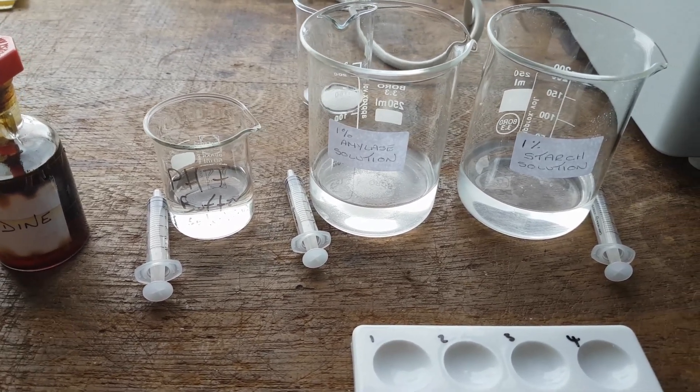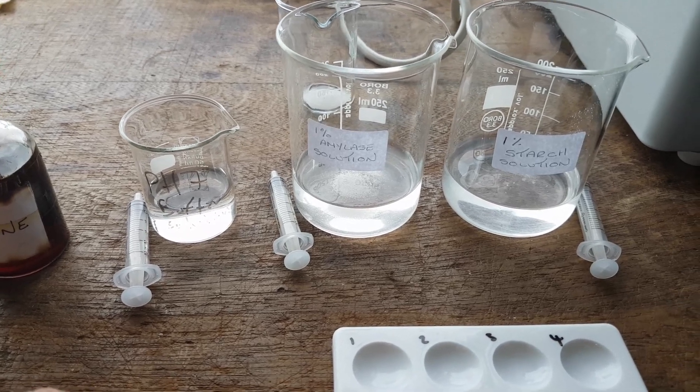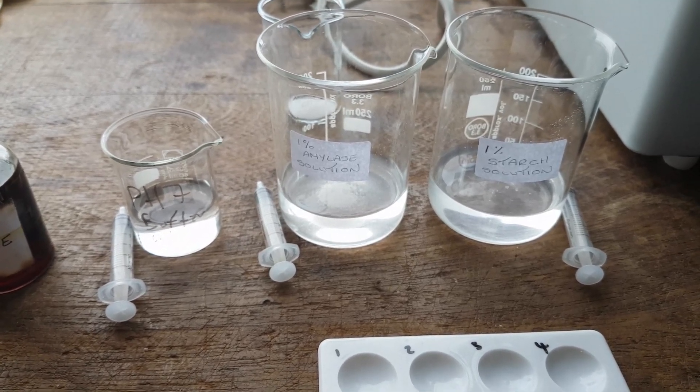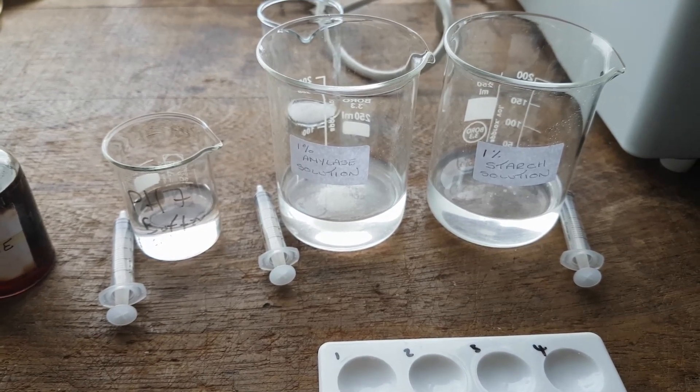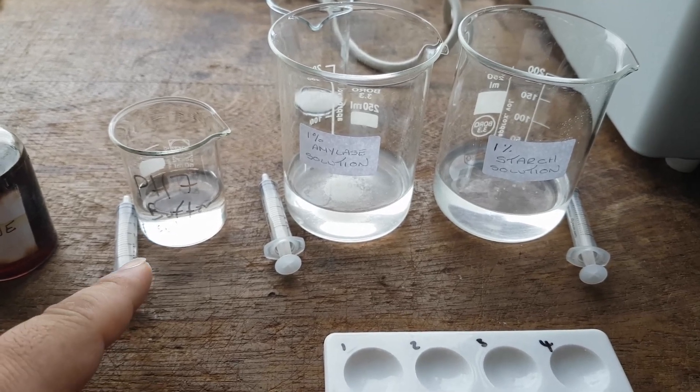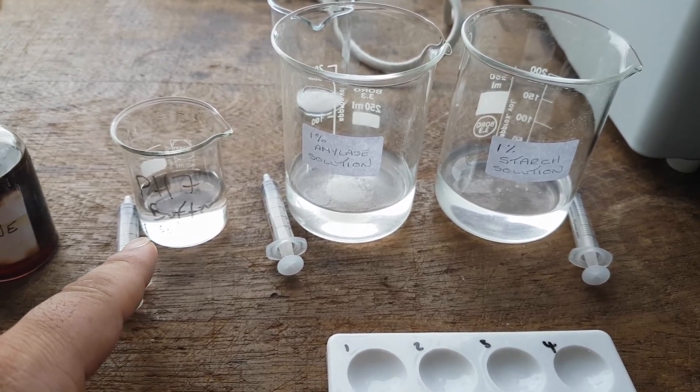The things that are being kept the same, that's the control variables, are the concentration of amylase, the concentration of starch, the volume of starch, the volume of amylase, and the volume of pH that we use. But the only thing that's changing again is the pH number.